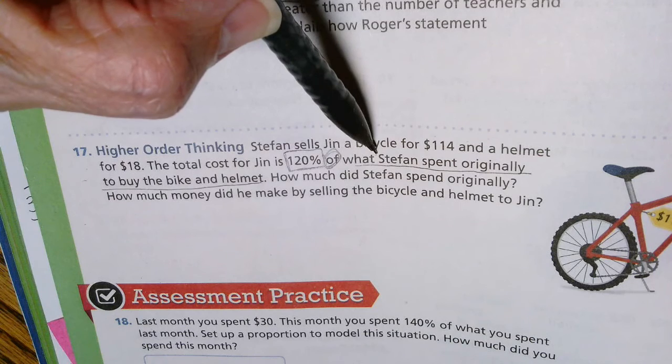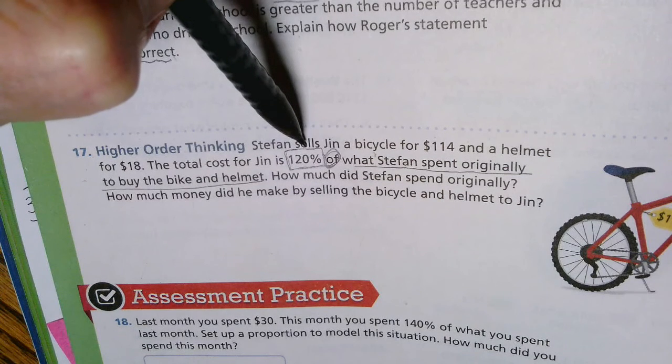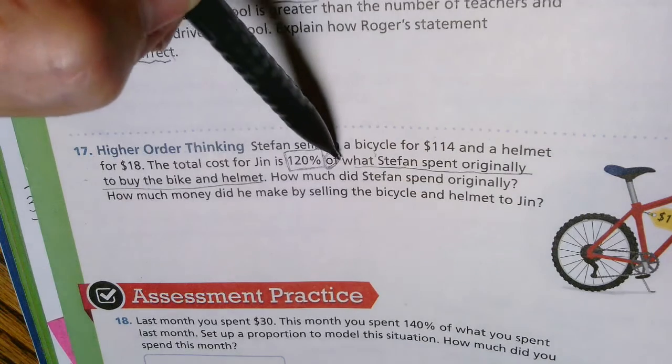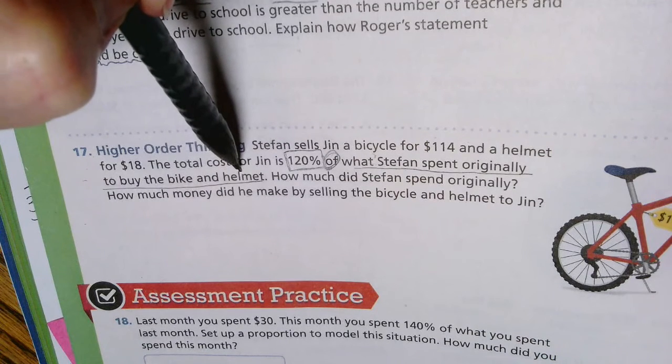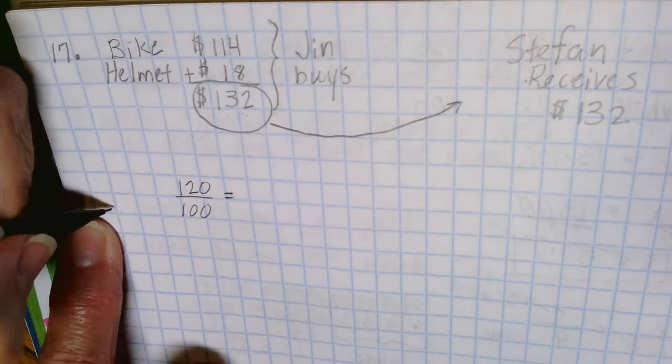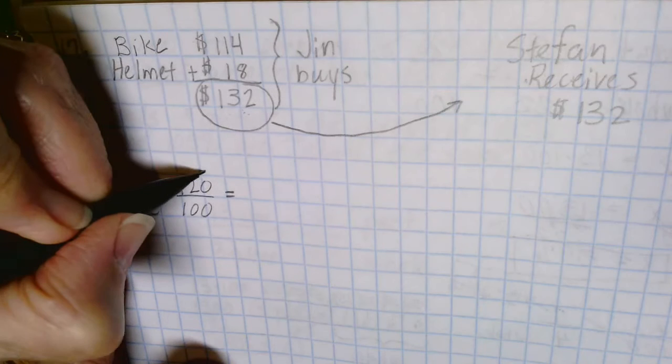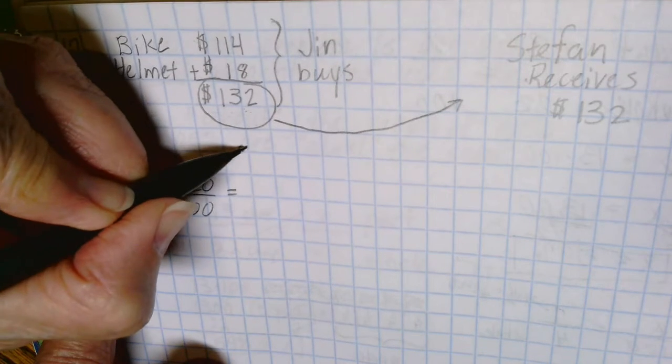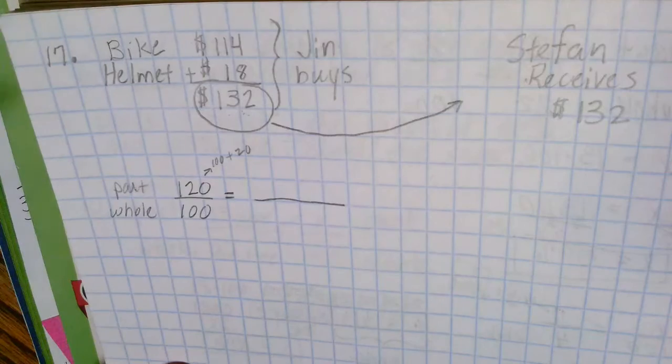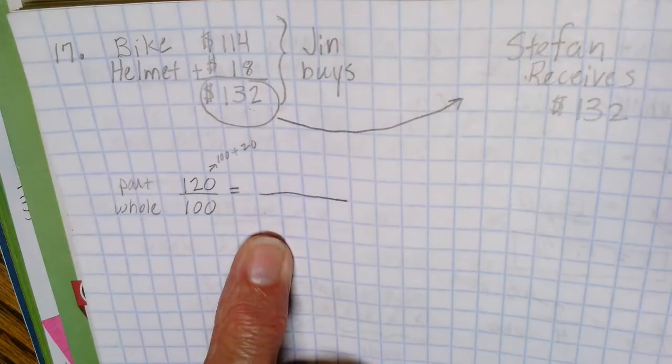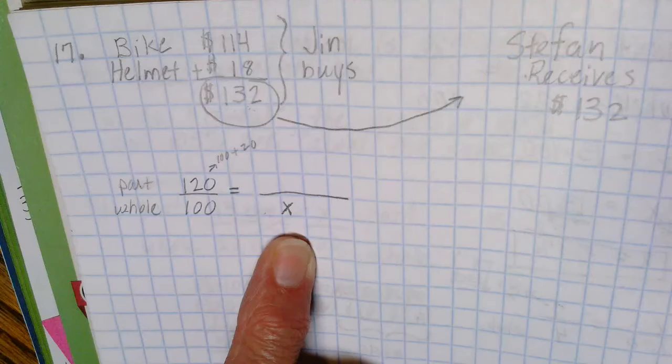We're going to write 120 as a ratio or a fraction, and we're going to set it equal to this amount. So here is our whole, here is our part, and remember this is 100 plus 20. And what Stefan originally paid for the bicycle came after the word 'of,' so his original amount that he paid is what we don't know.